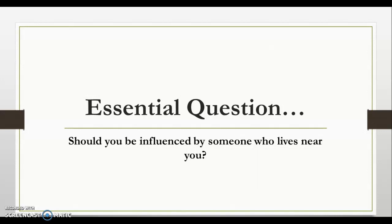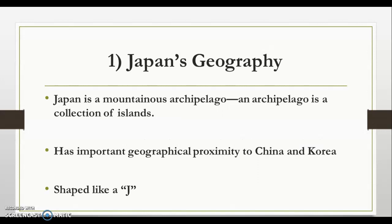Japan's geography: Japan is a mountainous archipelago. An archipelago is a collection of islands, so Japan is covered in mountains much like Greece was, but it is also a collection of islands — not one island by itself. This is going to be very important for the SOL test. It has important geographical proximity to China and Korea. Back during this time, Korea was one country; you now know it as two countries, North Korea and South Korea. China and Korea are going to have major influences on Japan's history.